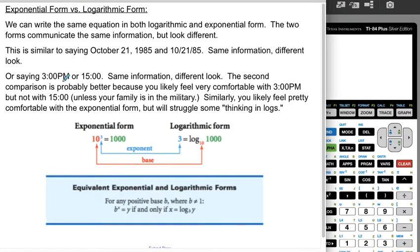Let's talk exponential form versus logarithmic form. We can write the same equation in both logarithmic and exponential form. The two forms communicate the same information but look different. One analogy is that I could say October 21st, 1985, which would be 10-21-85. Same information, very different look.